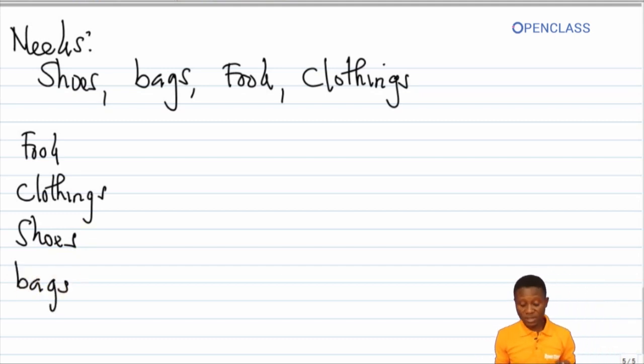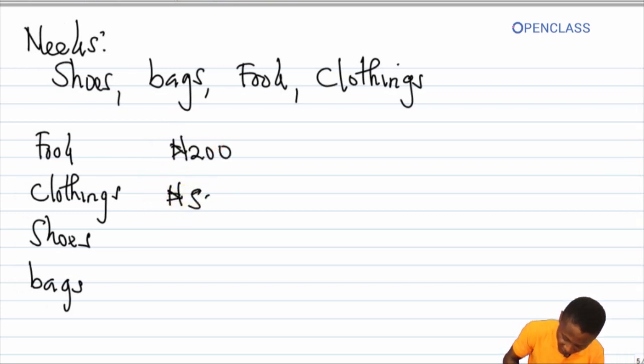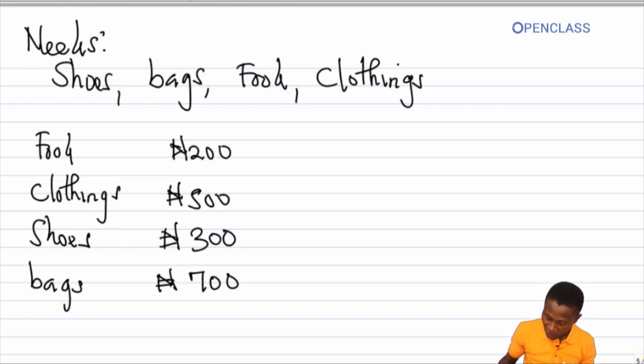Let us assume that each of these items goes as follows: this goes for 200 naira, this goes for 500 naira, this goes for 300 naira, and this one goes for 700 naira. If you add all of this together, the total is 1,500 naira.